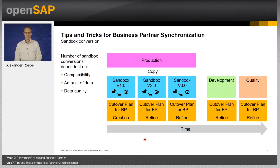Usually, we have to take care of two types of sandbox systems. There are sandboxes for business partner synchronization and CVI only — for example, to check the result of full data cleansing activities. The other type of sandbox is for S4HANA conversion. The individual project decision determines whether you require both types of sandboxes or merge both activities from the first sandbox onwards.